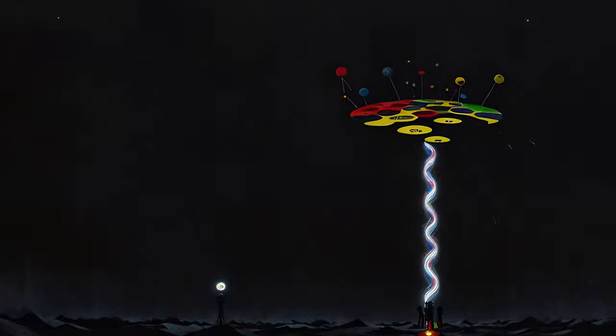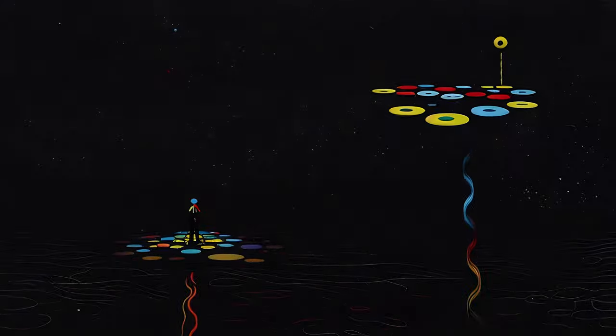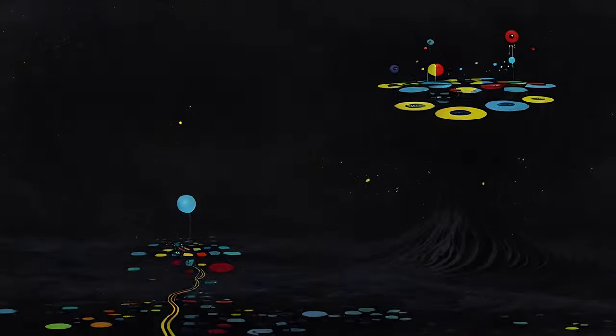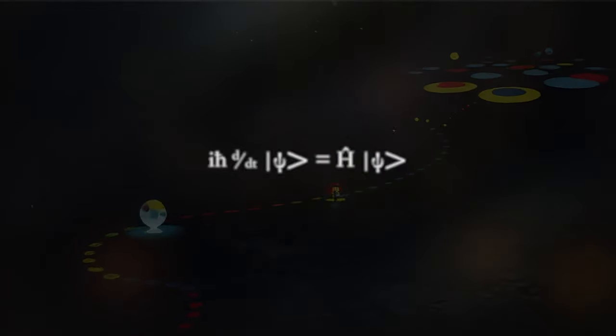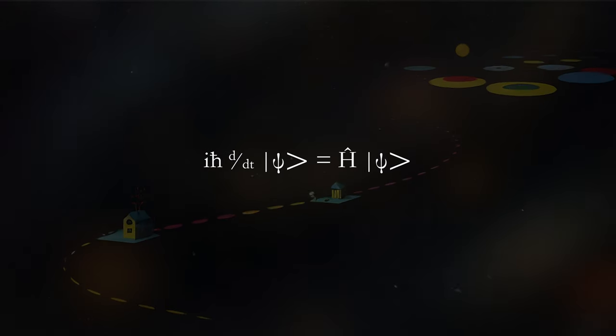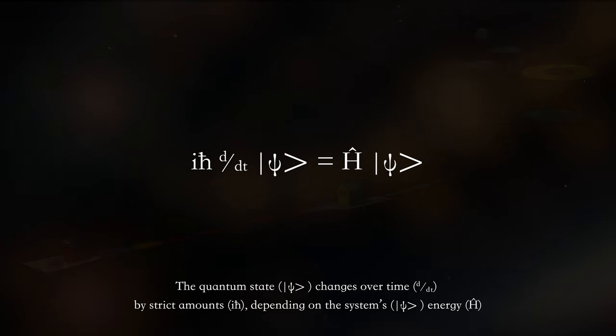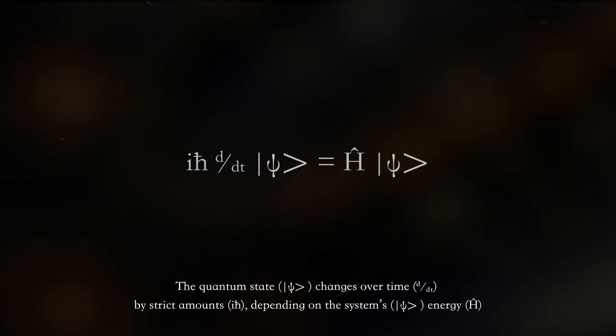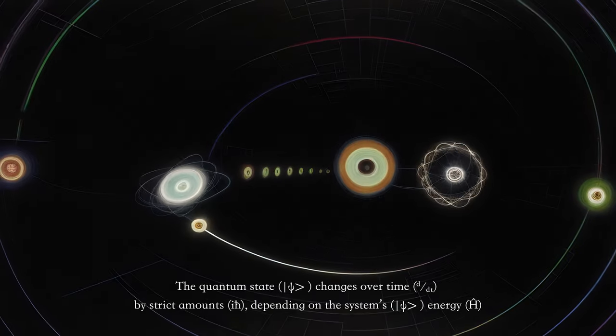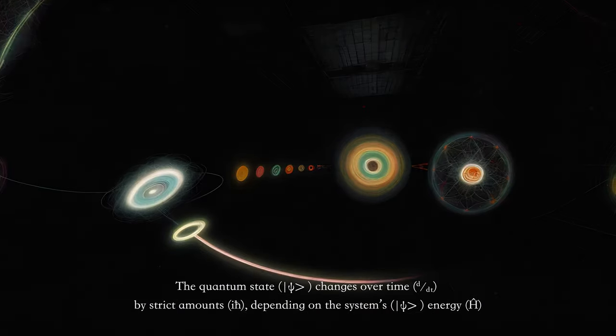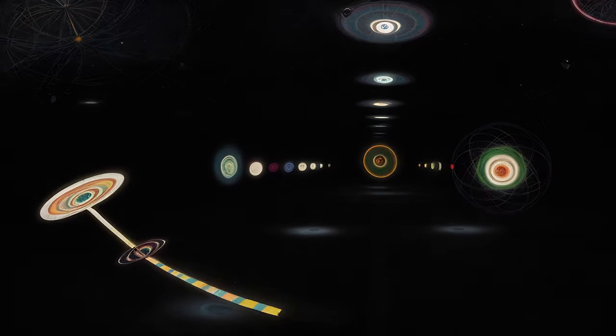But unlike clouds in the sky, a quantum object's cloud state is one of probability. The dynamics of this probability are given to us by the Schrödinger equation, a mathematical description of the wave function correlating with how likely it is that a particle will be found within any region of space.